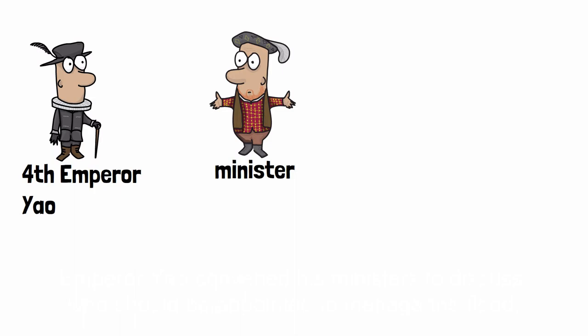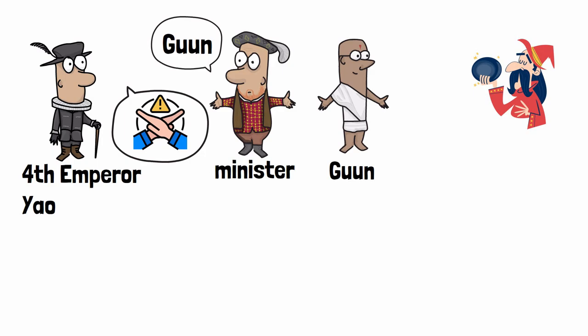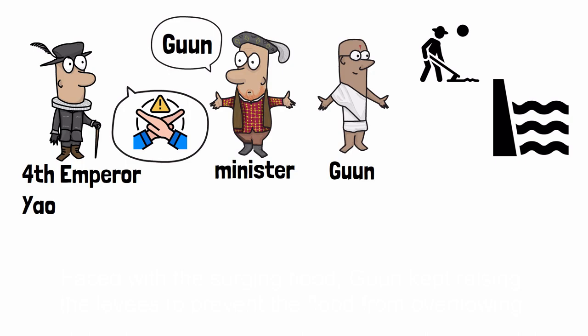Emperor Yao convened his ministers to discuss who should be appointed to manage the flood, and they all recommended Gun. Yao felt that Gun was too arrogant and might not be able to complete the task, but at that time, there was simply no more suitable candidate, so he reluctantly let Gun try. Upon receiving Yao's order, Gun invited a sorcerer to predict his fate. The sorcerer said, 'This matter is very ominous. There's a beginning, but no end.' Despite the unfavorable prediction, Gun eventually accepted the order and set off to manage the water.